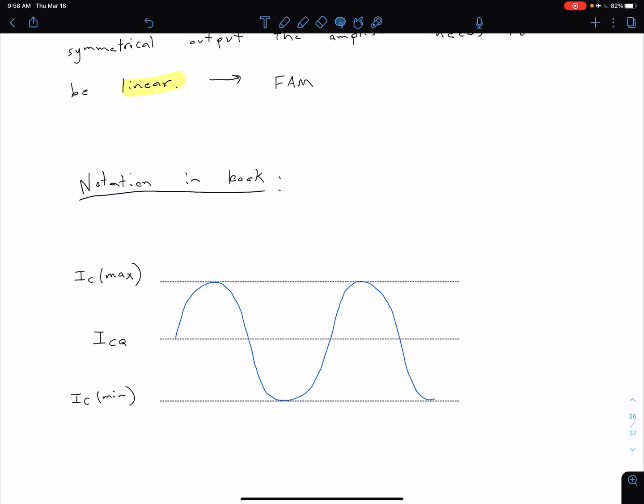Here we have our ICQ in the middle and we're saying that it's allowed to vary to some maximum value before it goes into saturation and some minimum value before going into cutoff or for some other reason before our signal gets clipped. The notation that you'll see in the text is that they call half of this variation, between ICQ and IC min or between ICQ and IC max, delta IC.